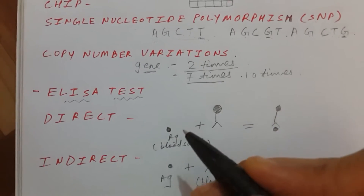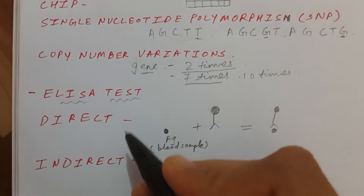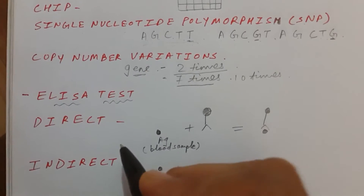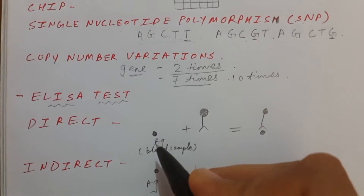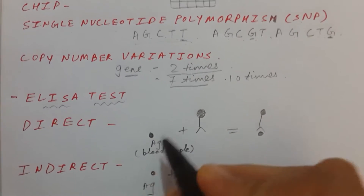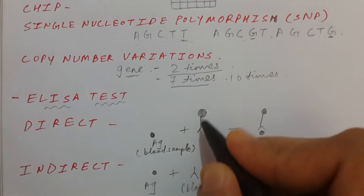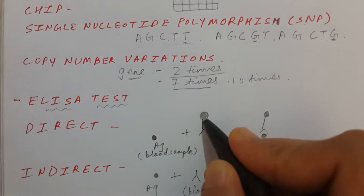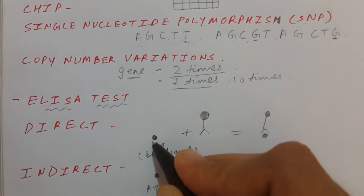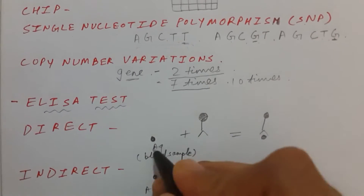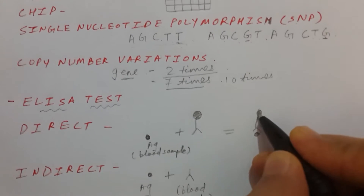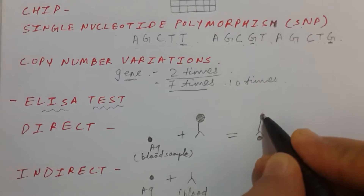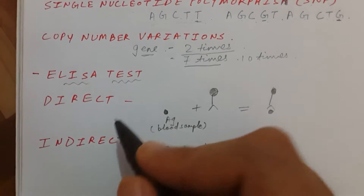In the direct ELISA test, we take the blood sample of a patient — suppose the patient is HIV positive. When we take the blood sample, there will be HIV antigen in his blood. We then add preformed antibodies against that HIV antigen and mix both. These antigens have an enzyme that gives fluorescence when the antibody binds to the antigen, forming an antigen-antibody complex. If there is presence of color or fluorescence, it means the test is positive and the person has HIV.